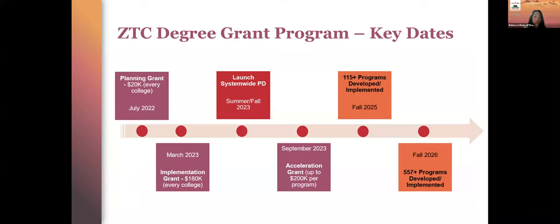What's coming very soon is the acceleration grant, where we want to provide support to and invest in colleges that are interested in building on existing local efforts and accelerating and scaling the work to develop more programs by fall 2026. By the end of this grant, we're anticipating more than 550 programs developed for our students, and that means a reasonable amount of ZTC sessions will be available for students to obtain their degrees or certificates.